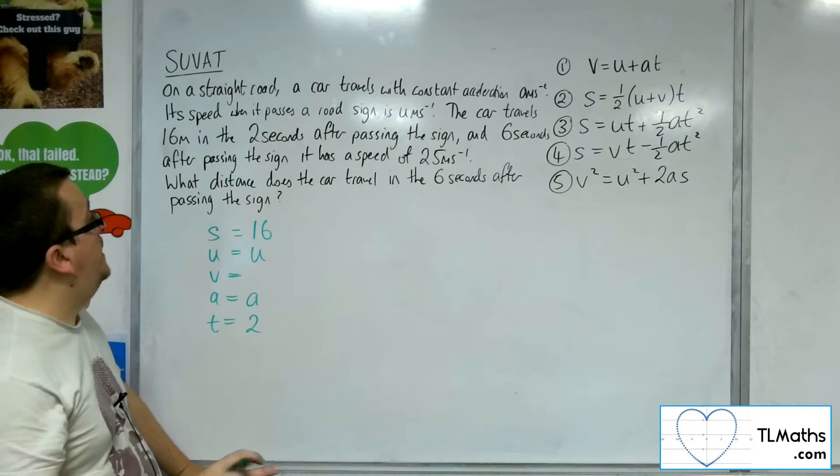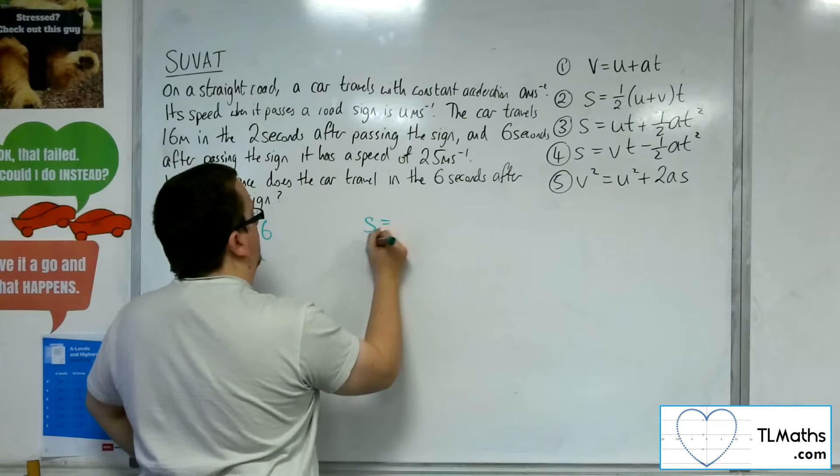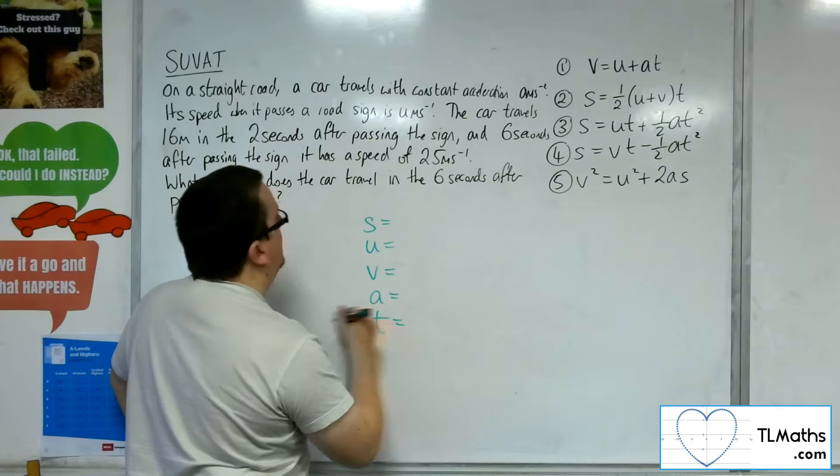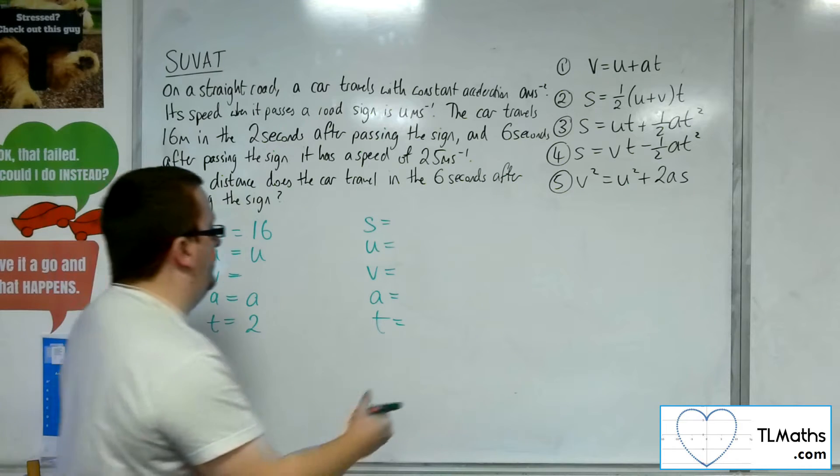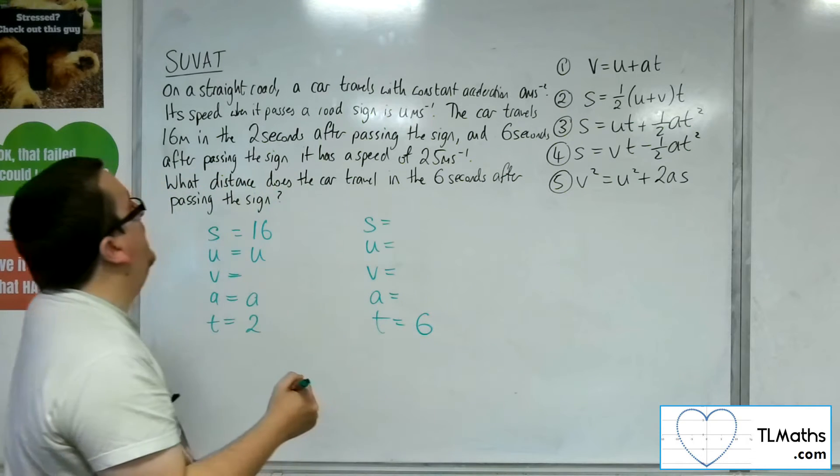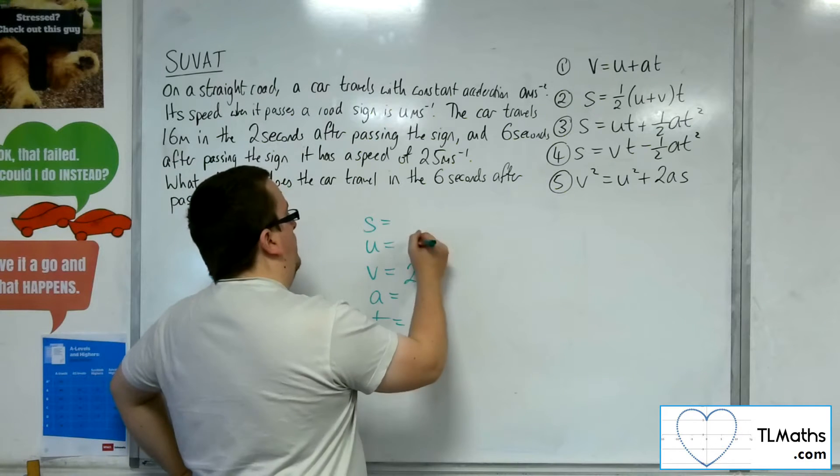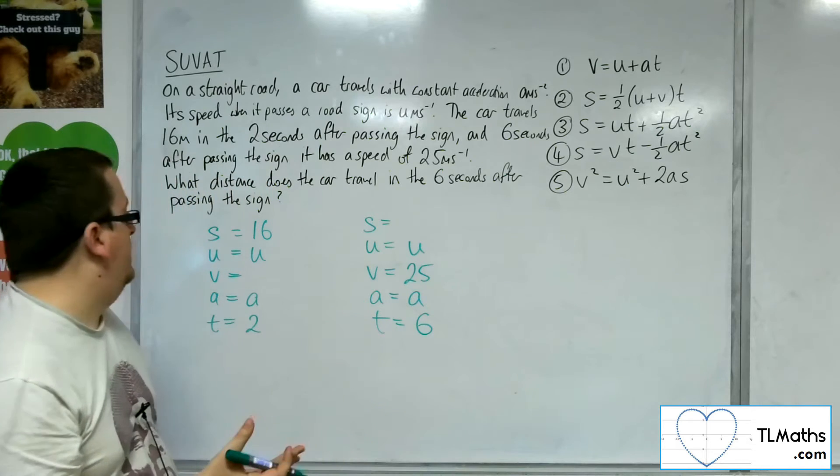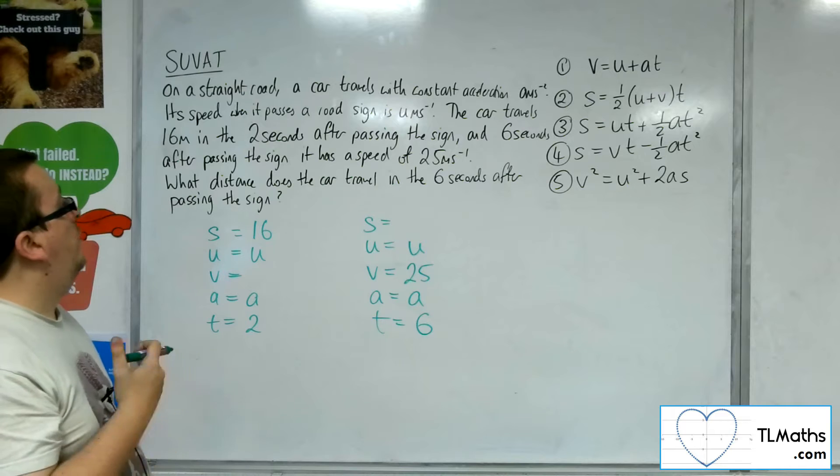Now the other bit of information we need to look at separately. We're told that in six seconds after passing the sign the final velocity is 25 meters per second. But we don't know u and we don't know a. We don't know s either. So this is the situation that we have.